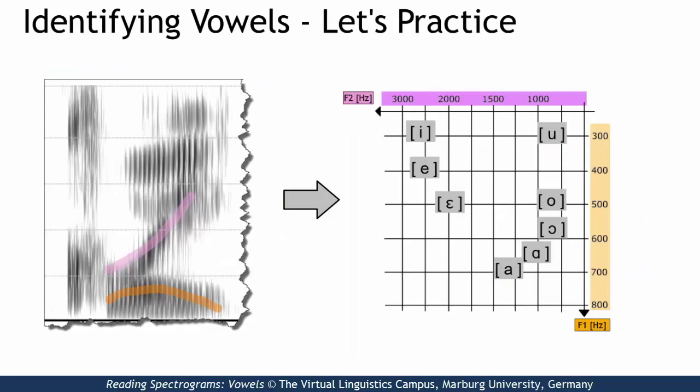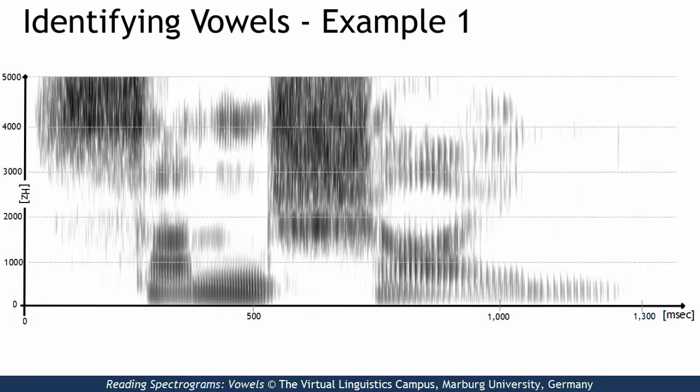Let us now identify the vowels within more complex spectrograms. In our first example, we can clearly identify at least two vowels, the first with formant 1 and formant 2 very close together. Thus it must be a low vowel, such as A.